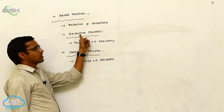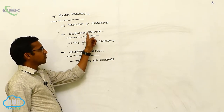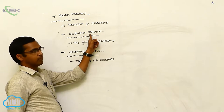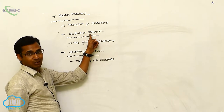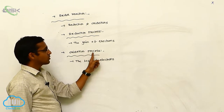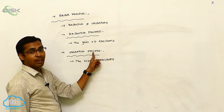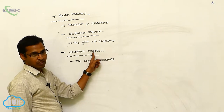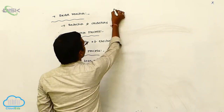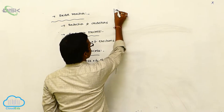In the reduction process, generally the reduction process is taking place at the cathode electrode. The oxidation process is taking place at the anode electrode. Now let's discuss the electrolytic cell.